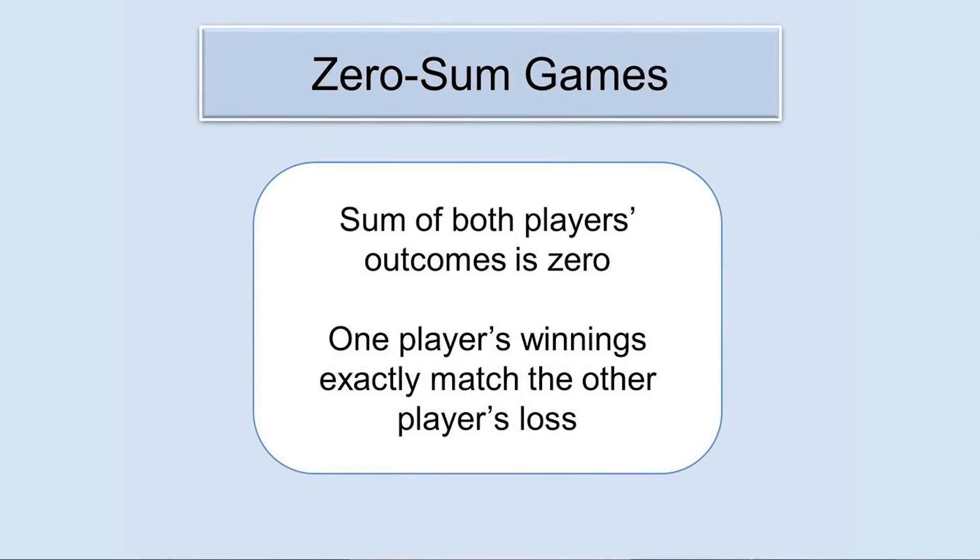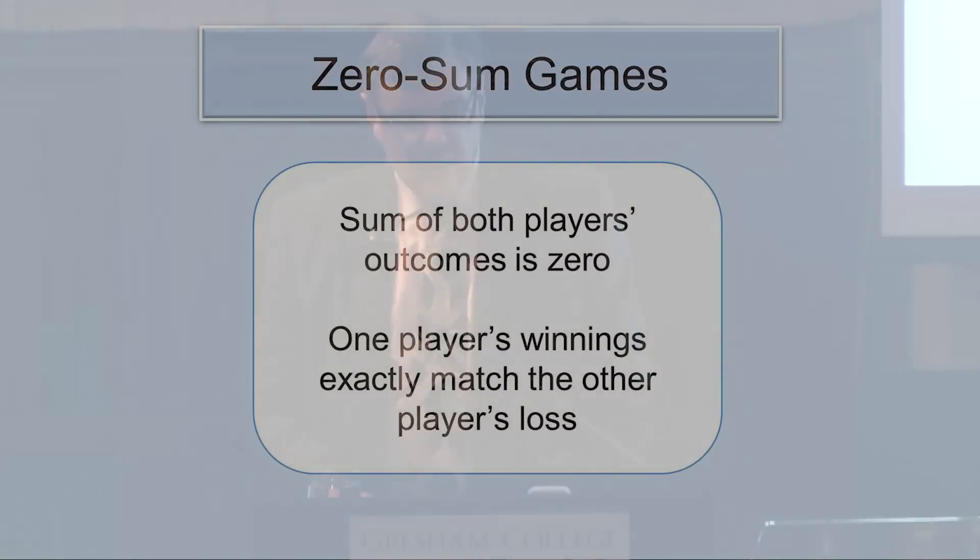One common feature of all the games mentioned so far is that what one player gains, the other player loses. If the striker scores, the goalkeeper concedes; if I choose Spock and my opponent chooses rock, I win and they lose. We call these zero-sum games, because if you add up the outcomes for the two players you get zero. One player's winnings exactly balance out the other's loss. But not all games in game theory are like this.